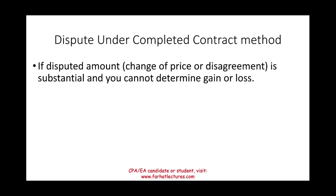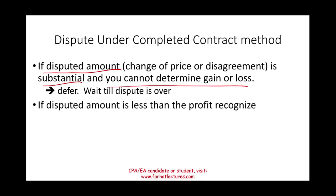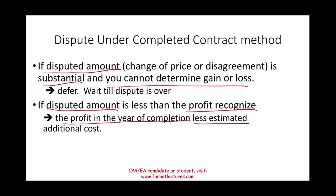Under the completed contract method, a dispute can arise when the customer is unhappy with the completed work. A dispute might involve disagreement about quality or price adjustments. If the disputed amount is substantial and you cannot determine the gain or loss, you wait until the dispute is settled. If the disputed amount is large enough that you genuinely don't know what the outcome will be, you defer recognition until resolution.